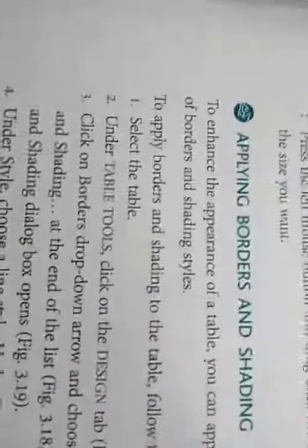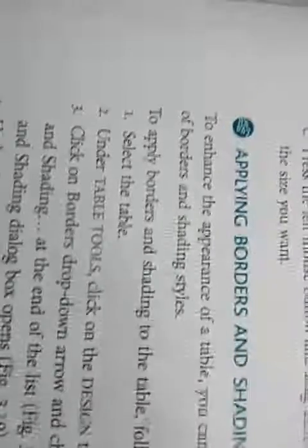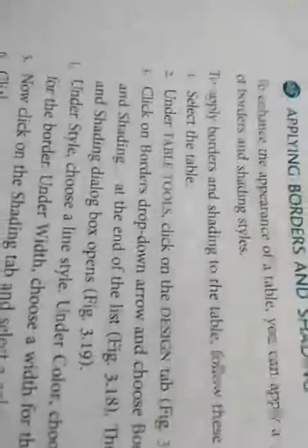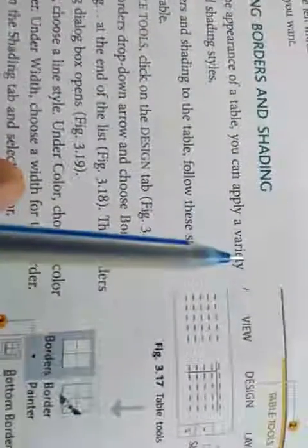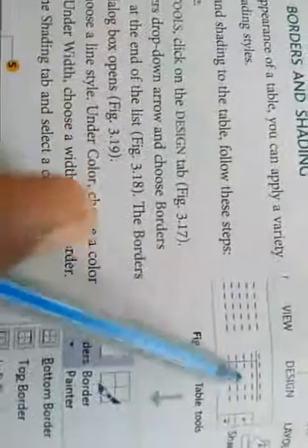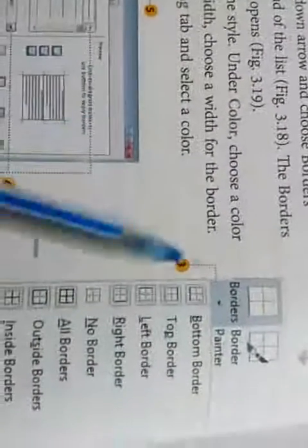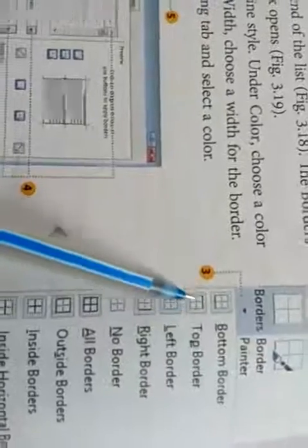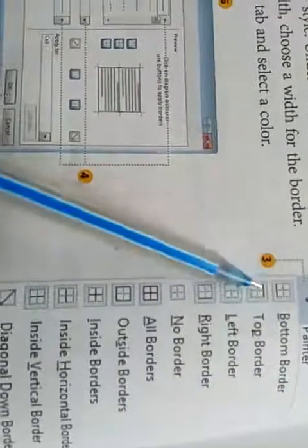The next option is applying borders and shading to an existing table. There are some built-in designs in your computer. We will select the Border and Shading options from the Format toolbar. We can also click on the Design tab where predefined built-in designs will appear, and we can select any of them. If we want to customize, we can select a border option — there are many options such as left, top, bottom, right, and so on.